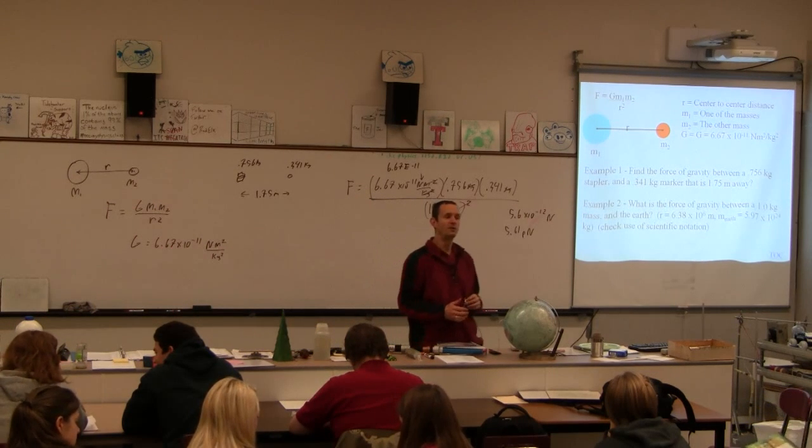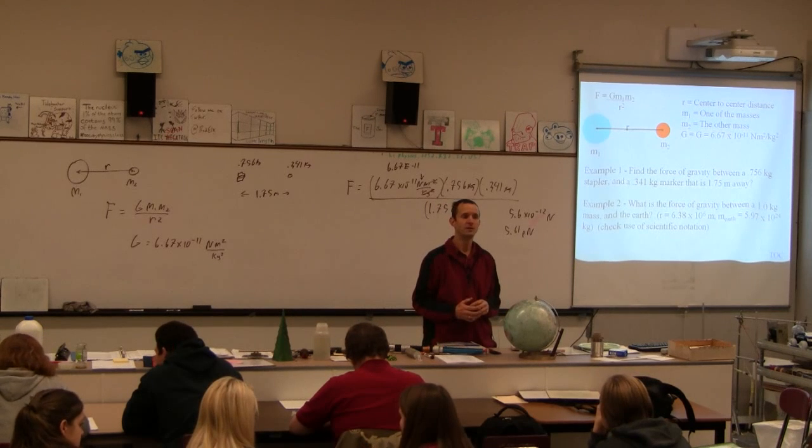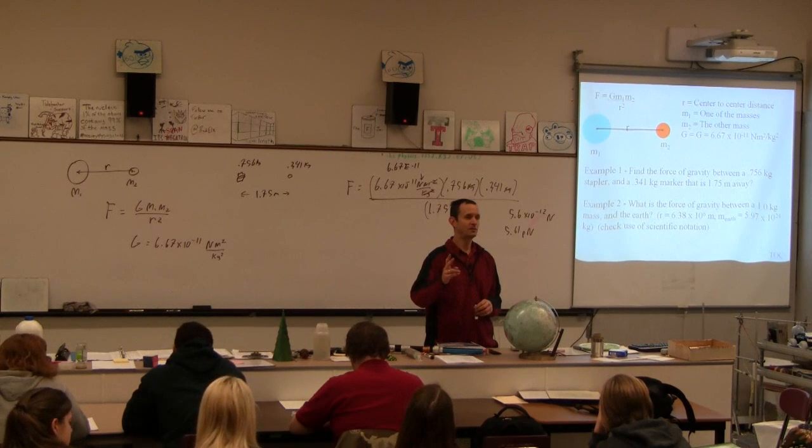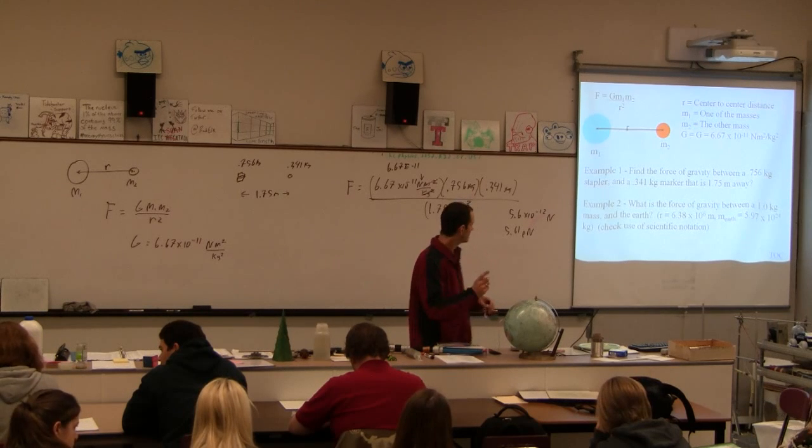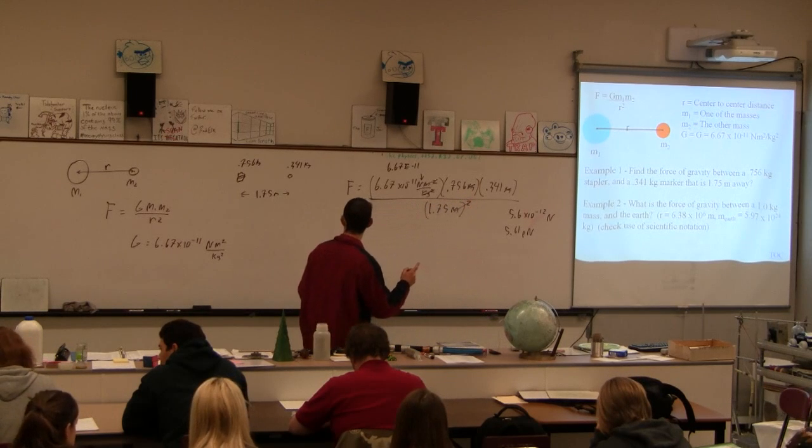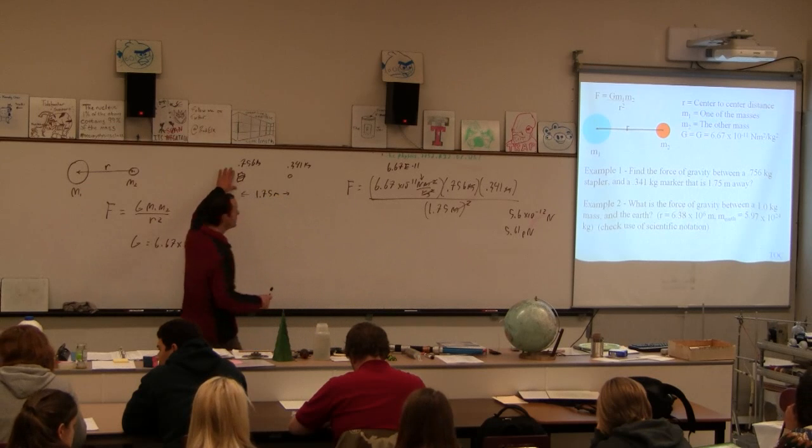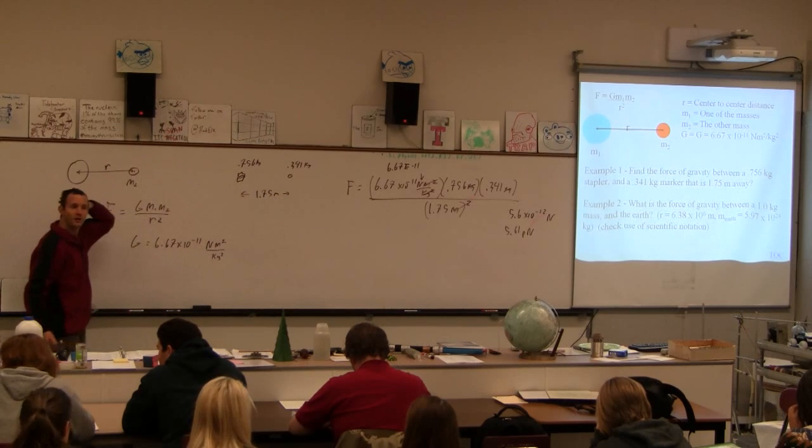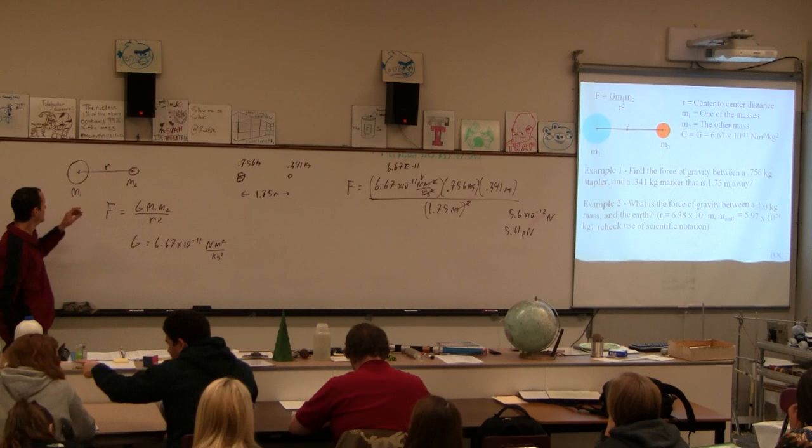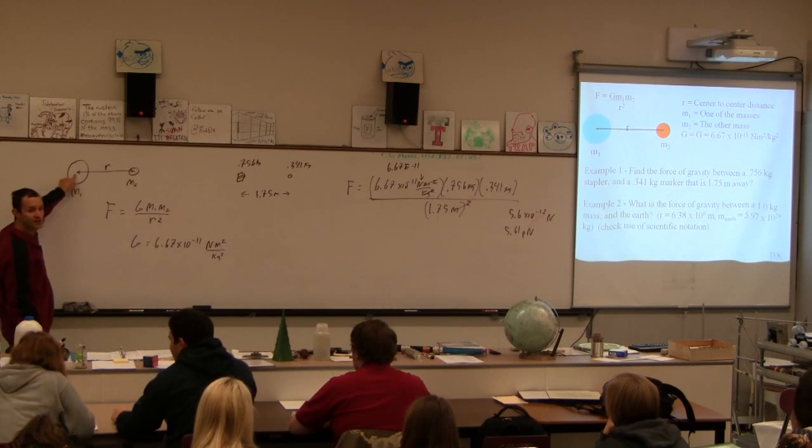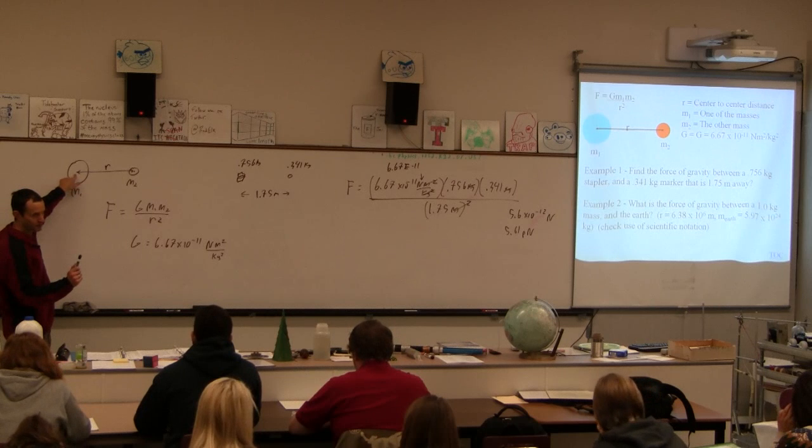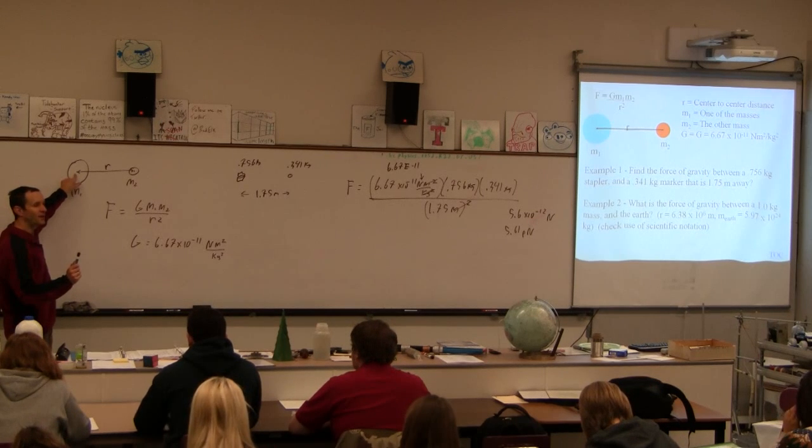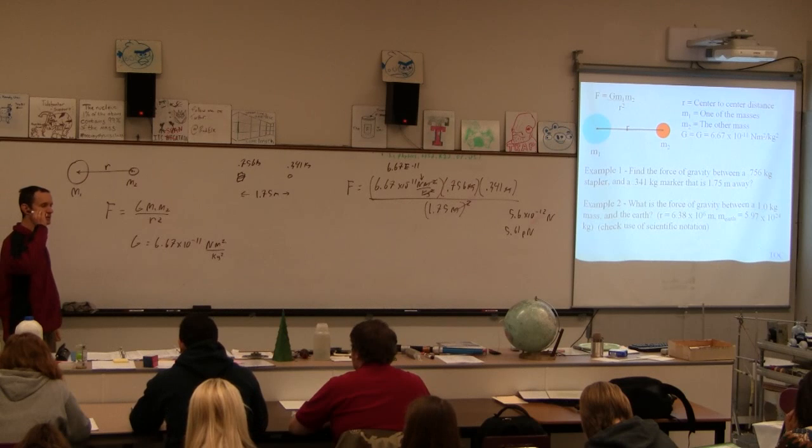Two things before we do the next example. Two things. No, wait. One thing. Just one thing. Here's the deal. This formula is exact. This formula is exact if these things are spheres and you're using the center-to-center distance. It's also exact if the objects are so far away that they could be considered points.